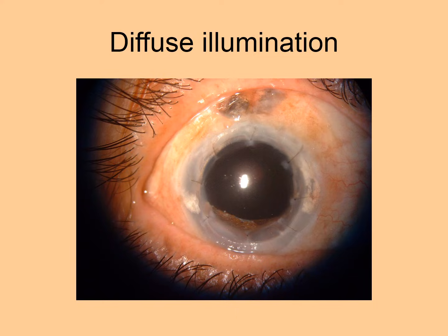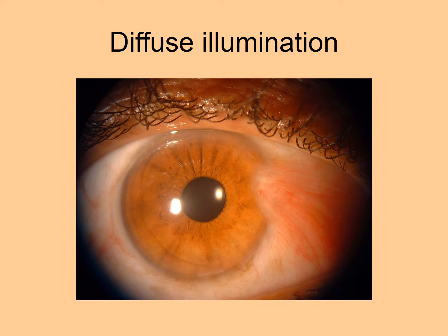Here there is a corneal transplant, which is a surface surgical procedure, and the sutures and the corneal transplant itself can be adequately seen in diffuse illumination, as can the iridenclysis iris enclavation on the top. Pterygium and other conjunctival lesions are also best seen with diffuse illumination.